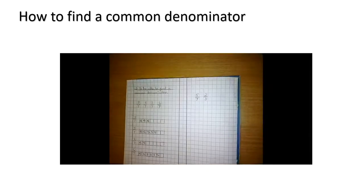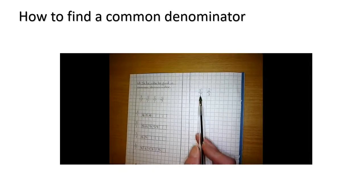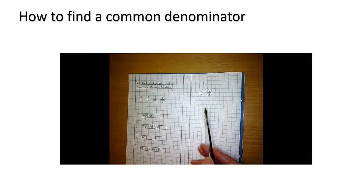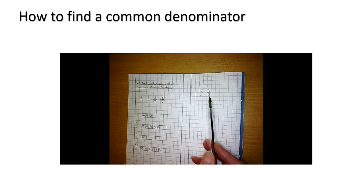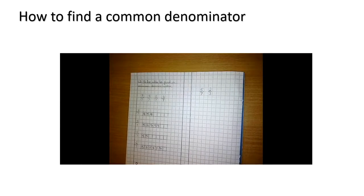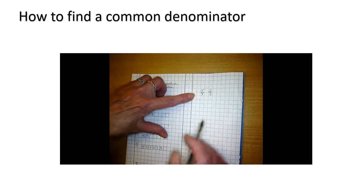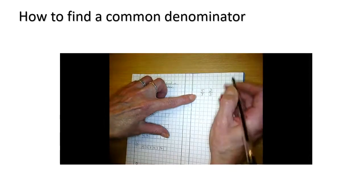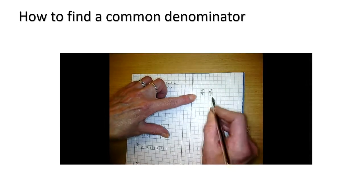But what happens when you get some work where the denominators are different? Well, what you have to do is you have to find the common denominator, a multiple that both of these denominators will go into equally. So a multiple of each of these. So first of all, let's have a think. I'm going to write out the multiples of each of these.